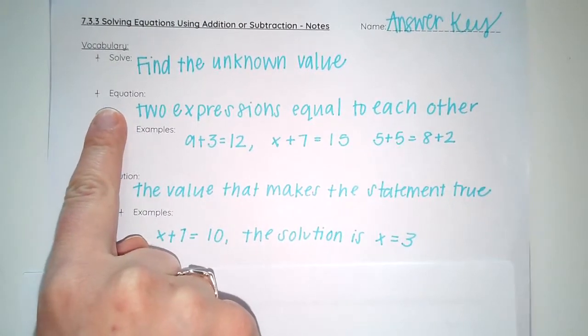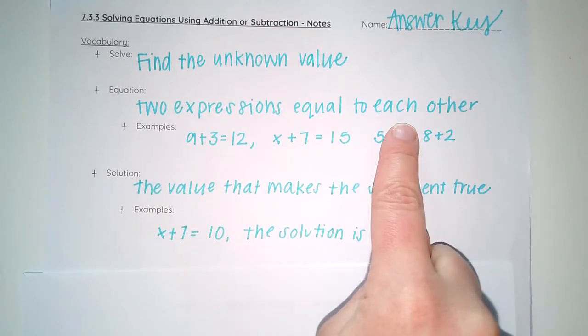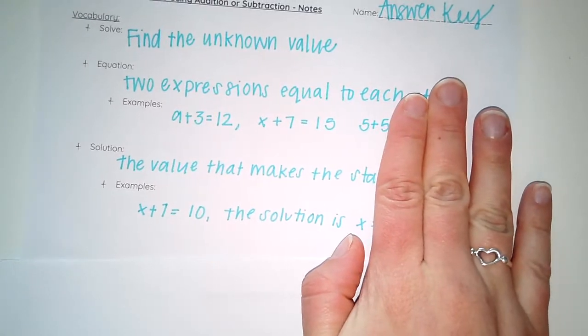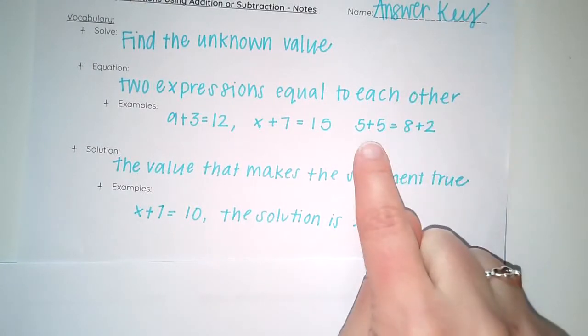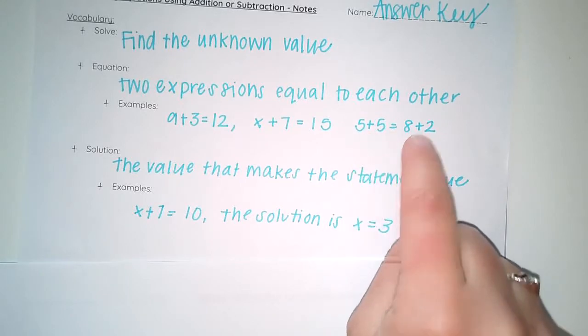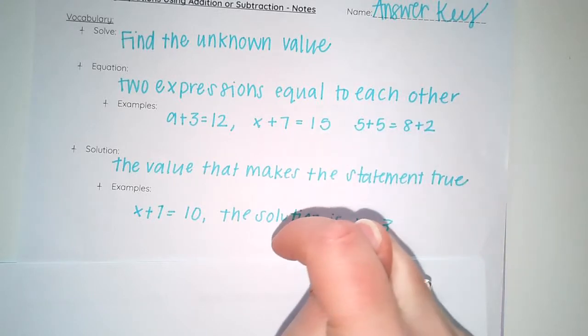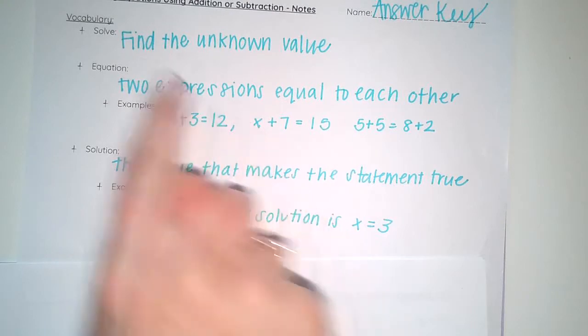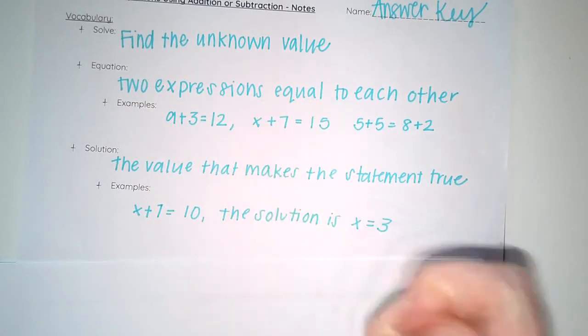An equation is two expressions that are equal to each other. So remember, an expression is like 5+5 without an equal sign. An equation has two expressions that are equal to each other. So here in this one, we don't know what x is, but we would solve to find x to make this statement true.